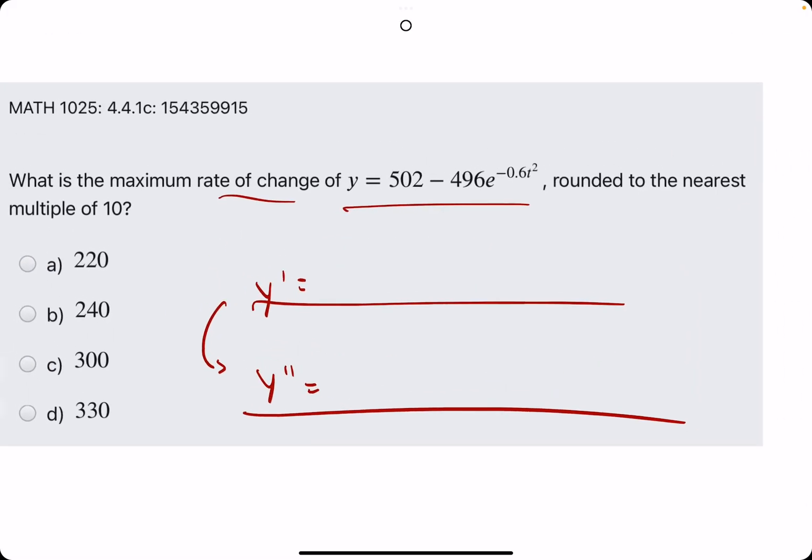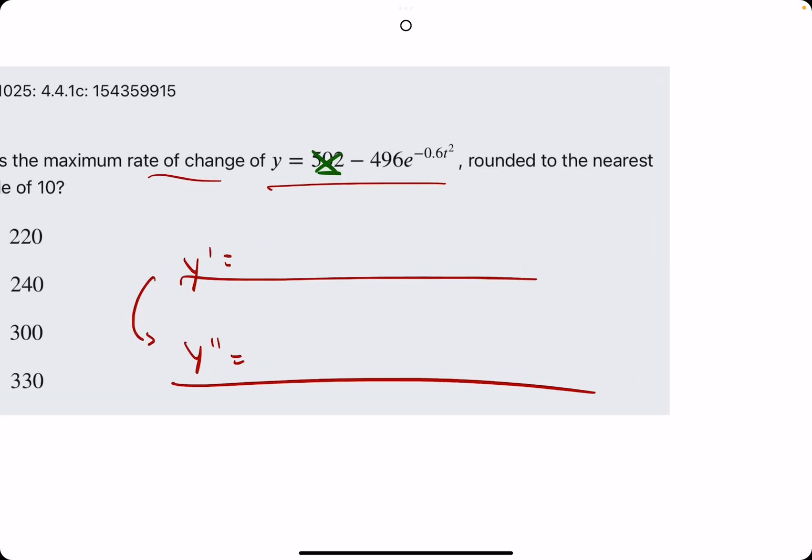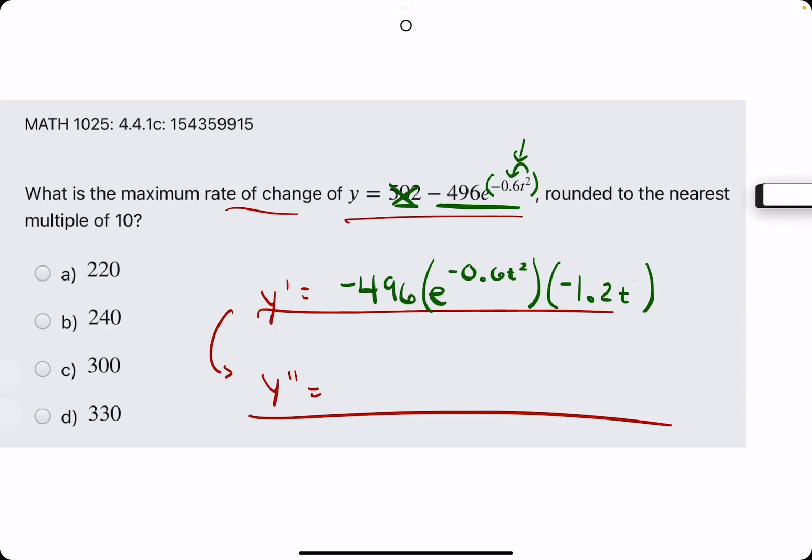Jumping into the first derivative of 502. 502 goes to 0 since it's a constant. And then, dealing with this term, we carry down the minus, the negative 496, leave the e term exactly the same. So, this is like the derivative of the outside layer. And then our inside layer is negative 0.6t squared. So, we want to multiply by the derivative of negative 0.6t squared, and that is negative 1.2t, because the 2 comes out, multiplies by negative 0.6. So, we get negative 1.2, and then t is raised to the first, so we'll just call it t.